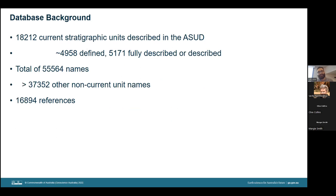The database today records some 18,212 names which are considered to be current — that is, still in broad usage by workers across the country and not superseded or rendered obsolete. Of these, 4,958 have been given a proper definition by the authors, and 5,171 are either fully described or described. However, of the total 55,564 names recorded in the StratUnits database, the vast majority are not current names — some 37,352 names which will be a combination of superseded, obsolete, or misspelled names.